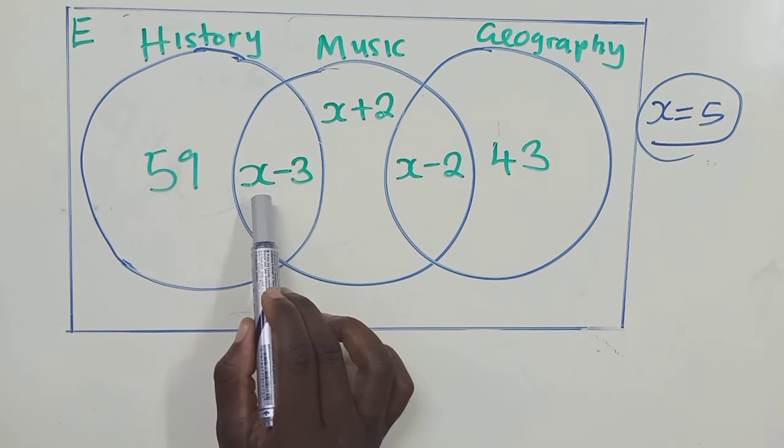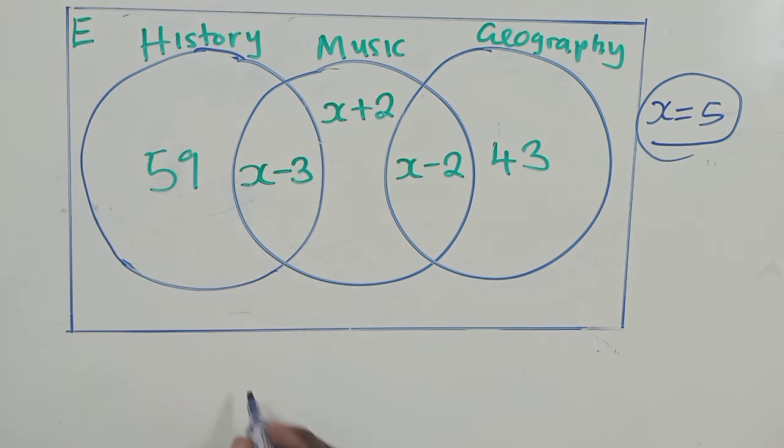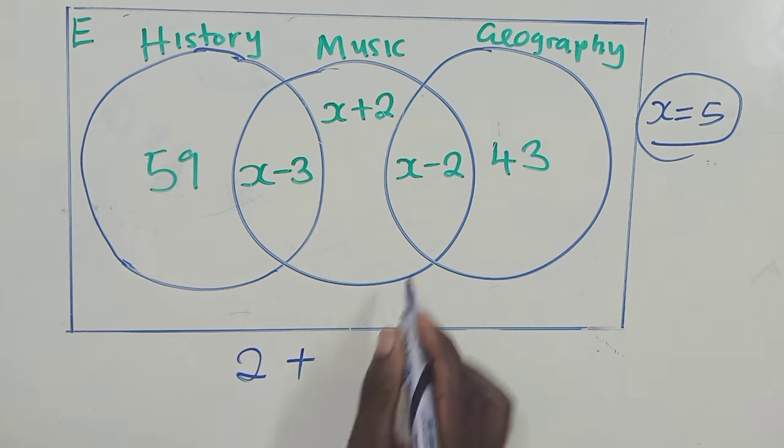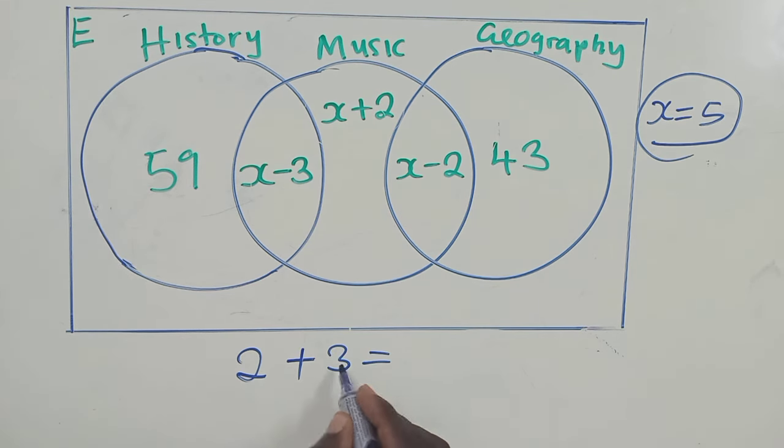So put a 5 here. What are we getting? 5 minus 3 is a 2. So 2 plus, here we put a 5, we're getting a 3. So it would be 2 plus 3, which is equal to 5.